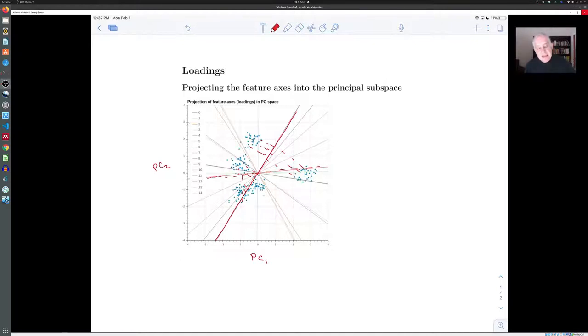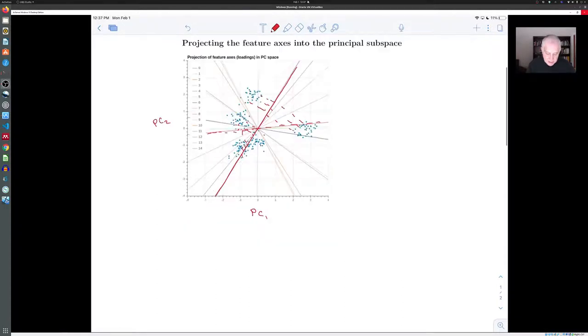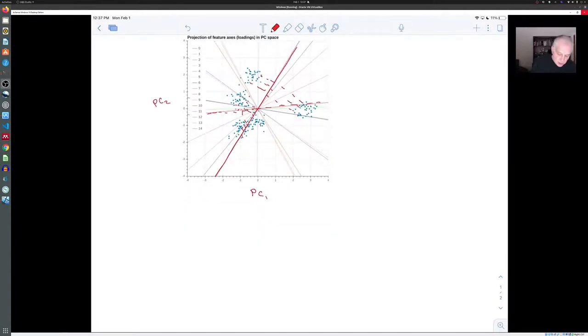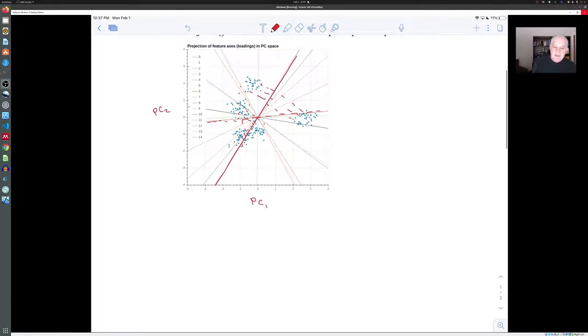So how do we find these directions corresponding to the original features? Well, the way to think about it is to imagine that we make - the scores were synthetic features. Now we're going to make some synthetic samples. So imagine we have a sample which has features one, zero, zero. So this is a one by K vector.